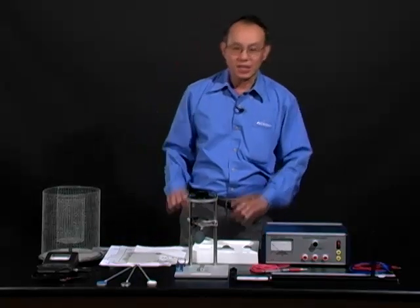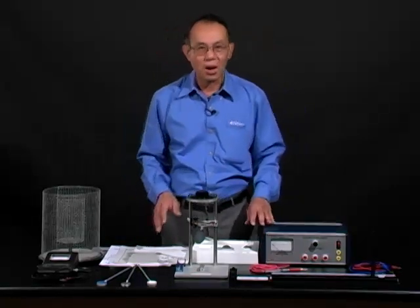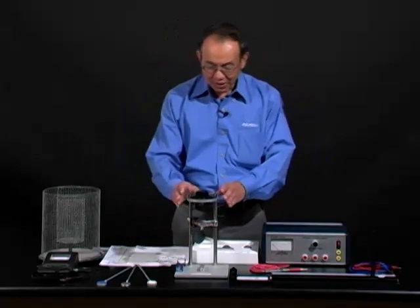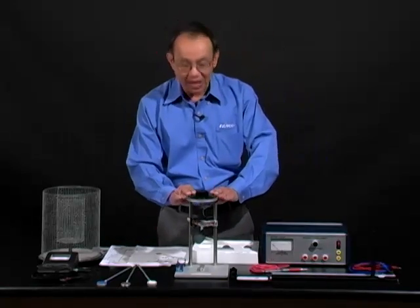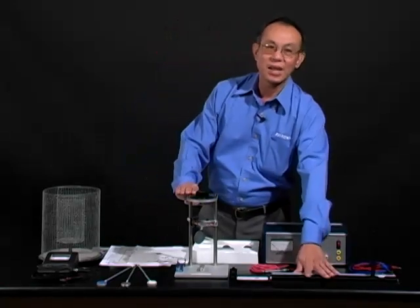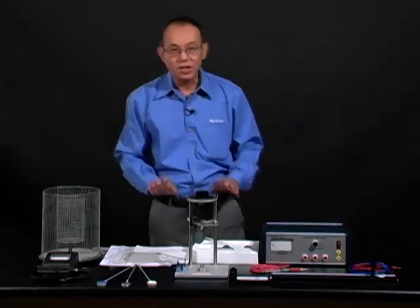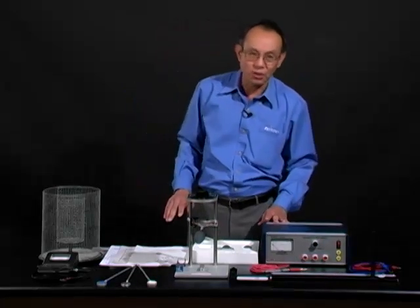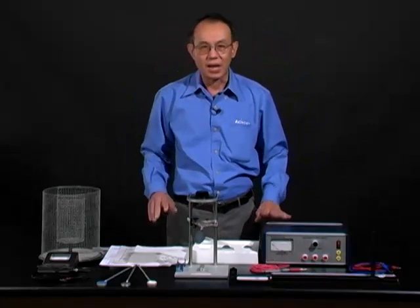The Coulomb Balance experiment consists of two primary components: the Coulomb Balance itself and a slide assembly. In addition, there are several other components that will make up the entire experiment.